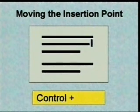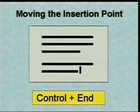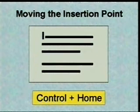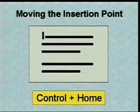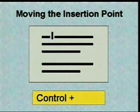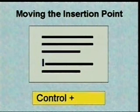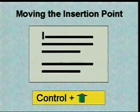When we hold down the Control key and press End, the insertion point moves to the end of the document. When we press Control+Home, the insertion point moves to the beginning of the document. To move one word at a time, we press Control+Right Arrow and Control+Left Arrow. Control+Down Arrow moves to the end of a paragraph or the beginning of the next one, and Control+Up Arrow does the same in the opposite direction.